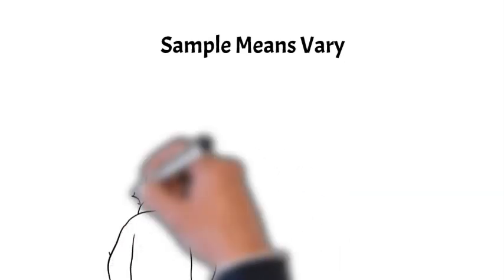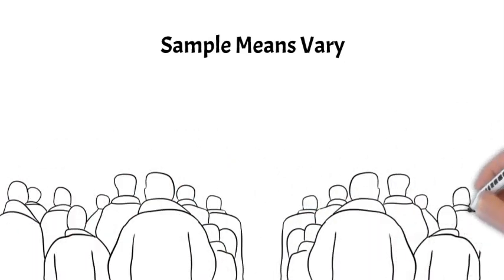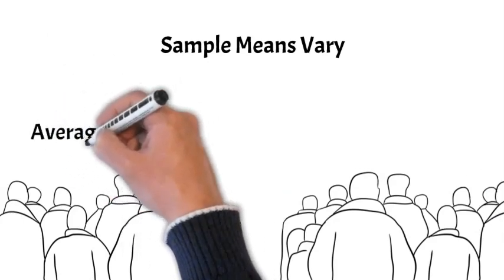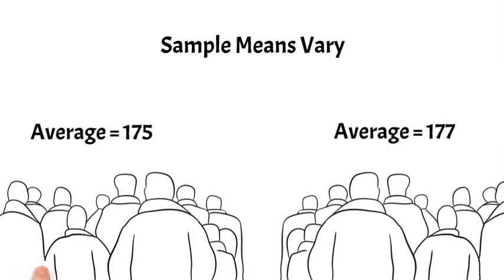For example, sample 25 men from a large population, record their weight, and then sample another 25 men. The average weight for each of these samples will vary. This variation in sample means is true for every process. Since sample means vary, we would expect that when we plot sample results on a control chart, it will not be a perfect estimate of the process mean, but it will be close.